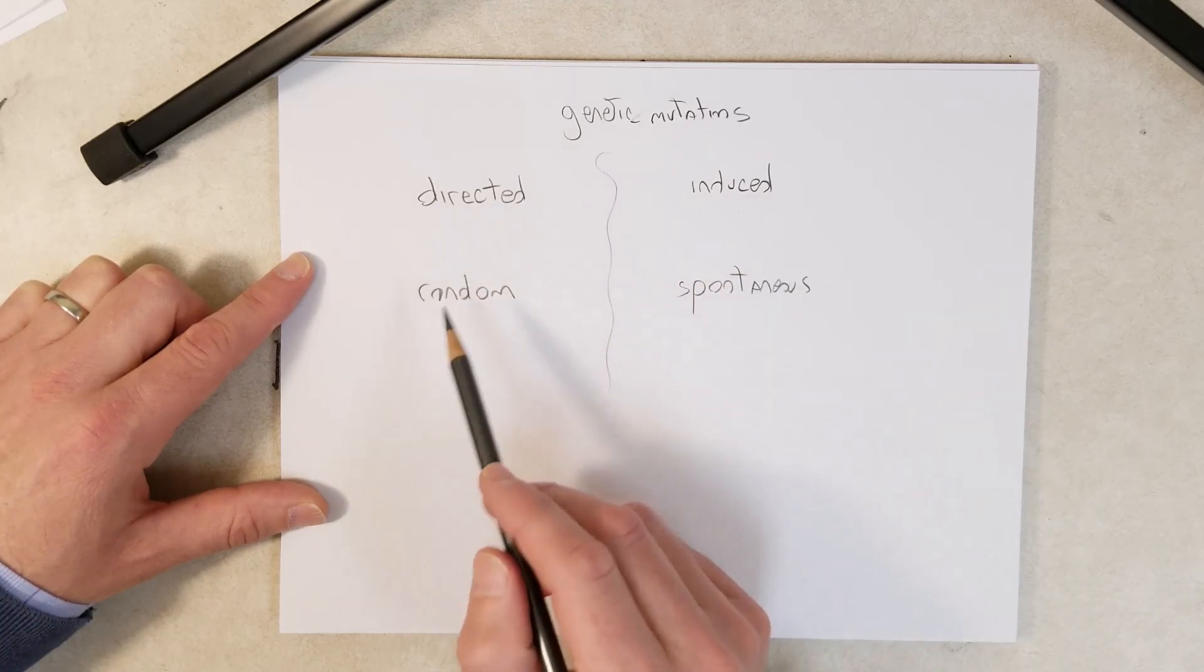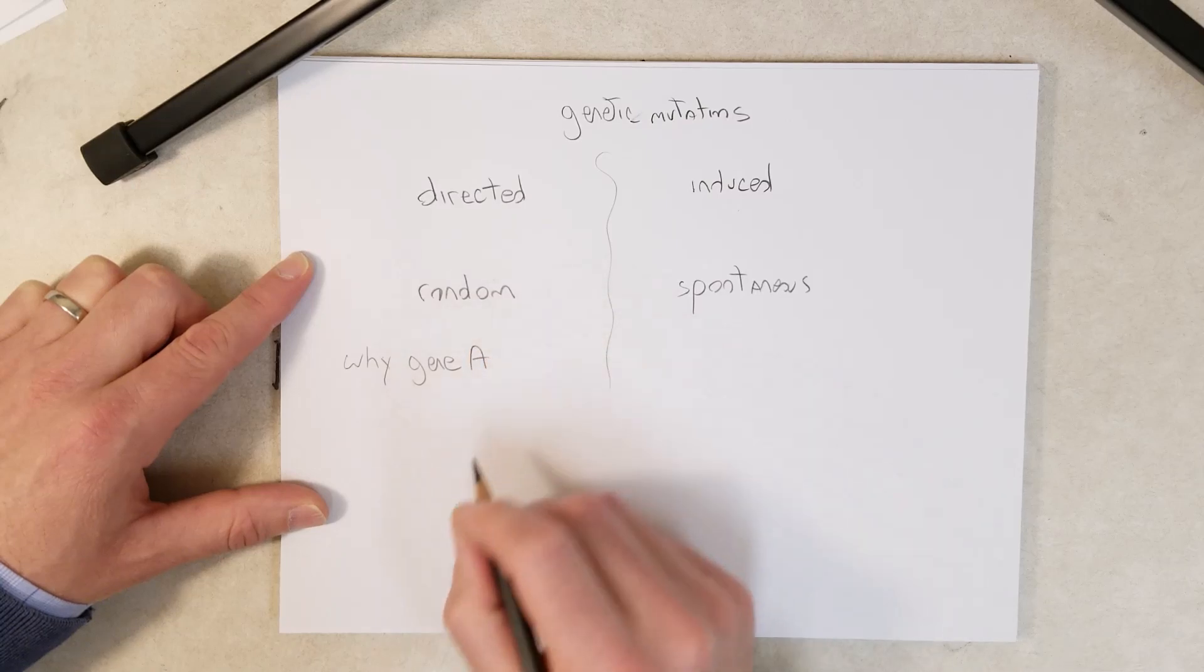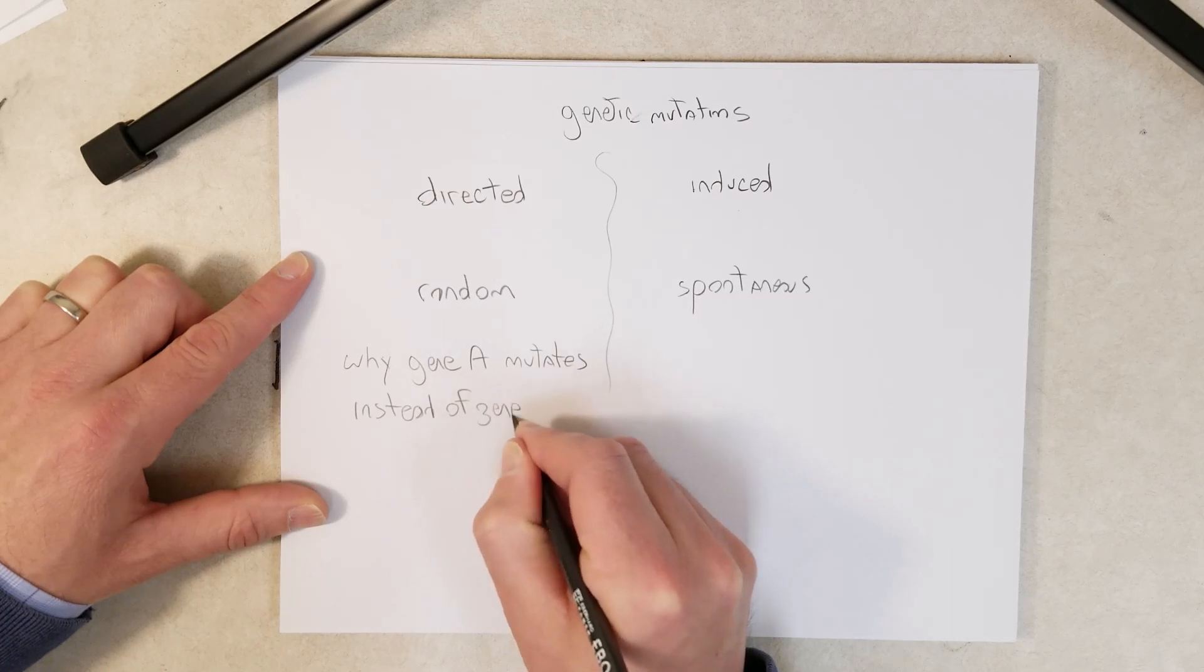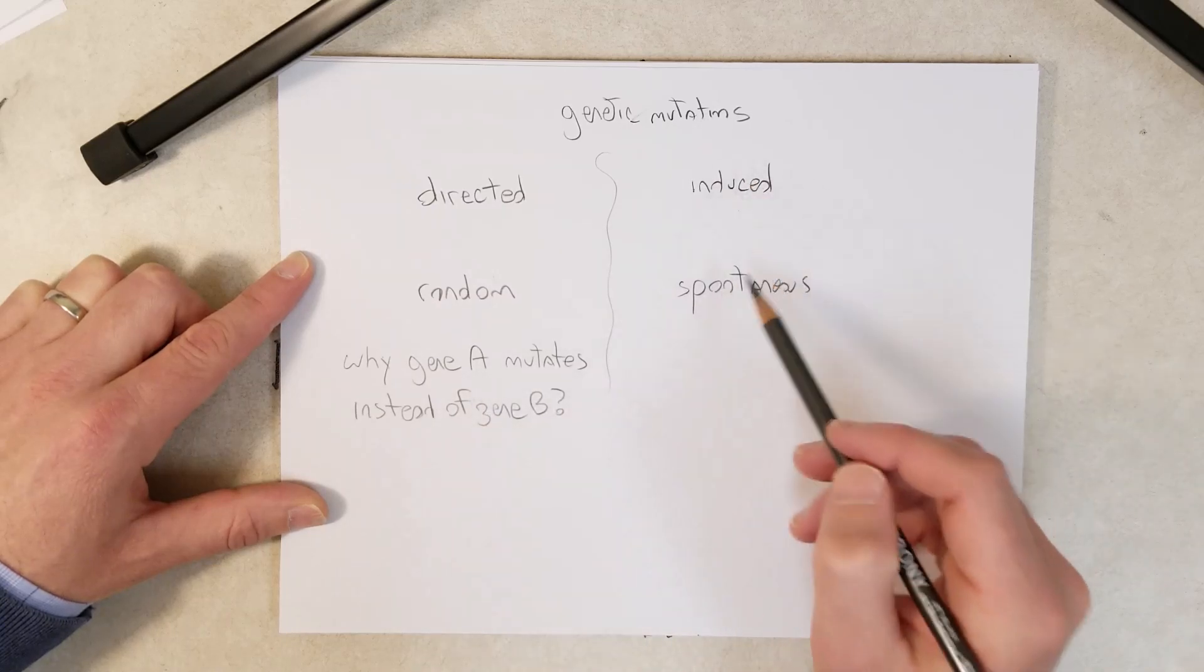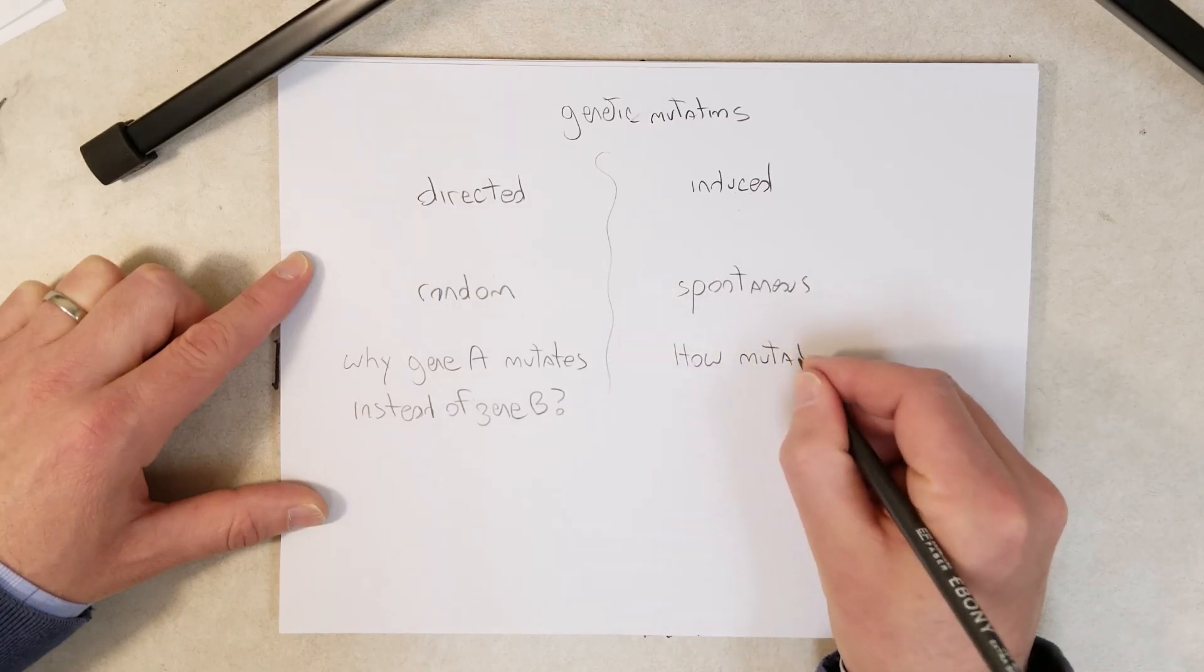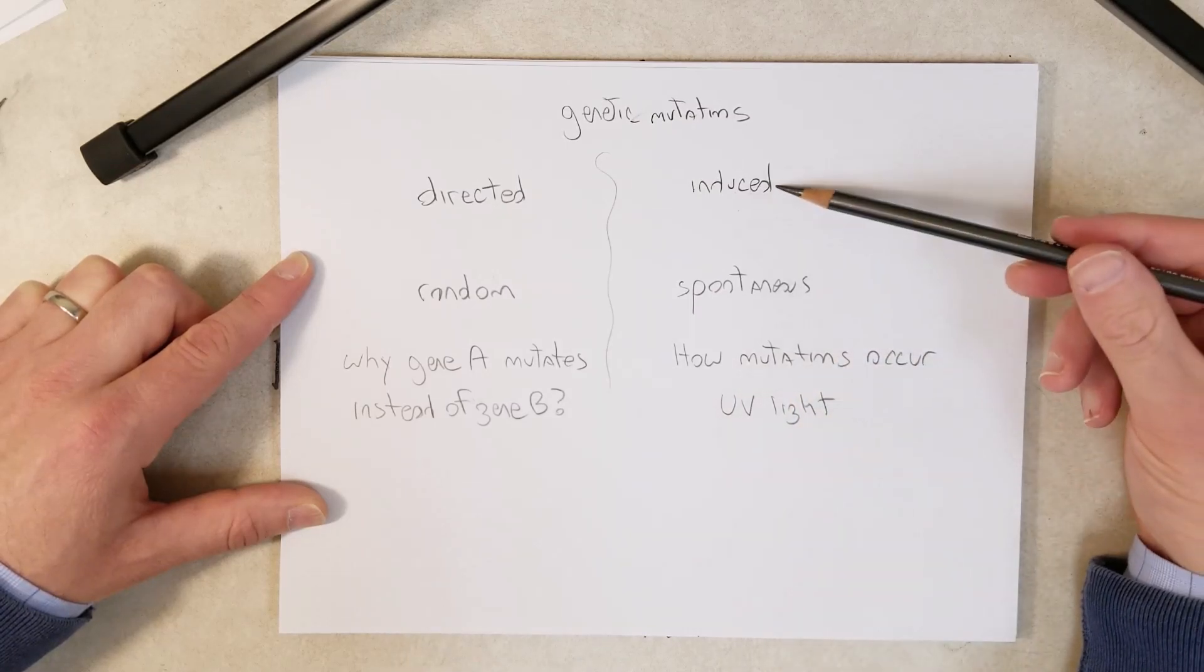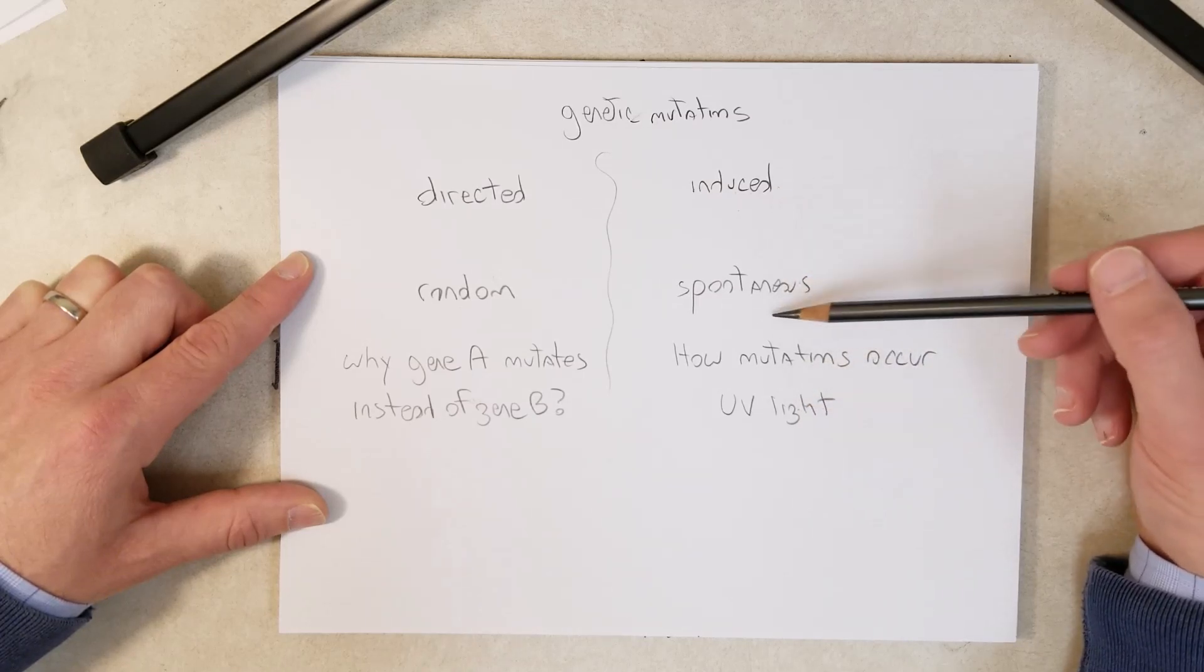It can get confusing when we discuss these terms because we use them to talk about different concepts. We use directed and random when discussing why any given gene, say gene A, mutates instead of gene B. We use induced and spontaneous to talk about how mutations occur in general. For example, UV light can cause mutations - are these induced or spontaneous?